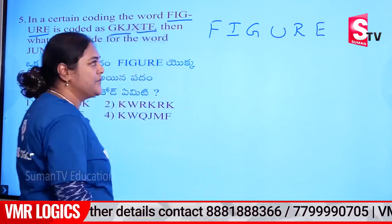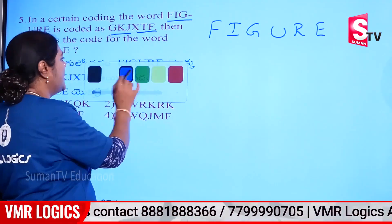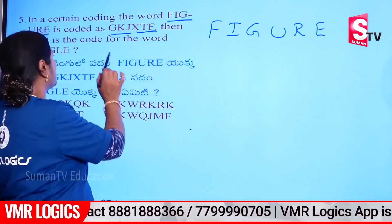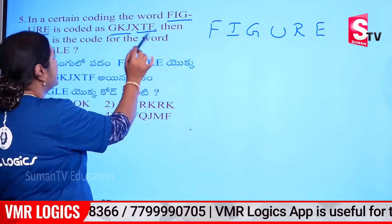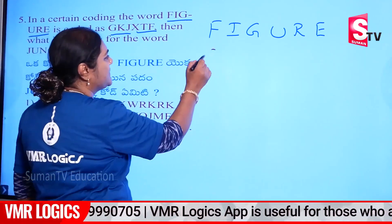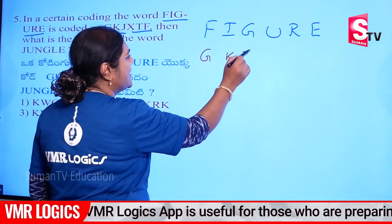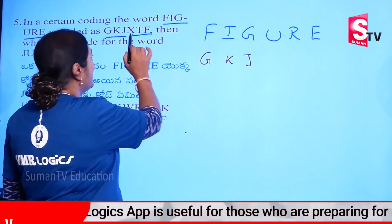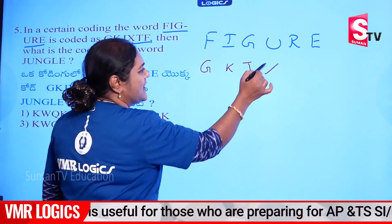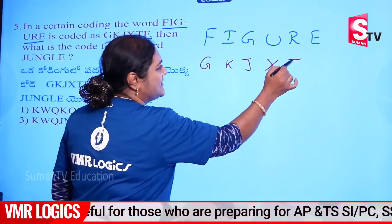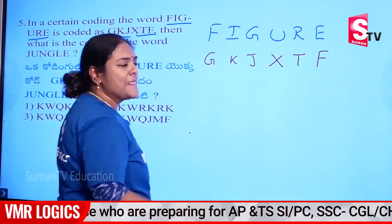This is how many letters? Each letter coded to another. Here it is: G-K-J, G-K-J, X-T-F, X-T-F.